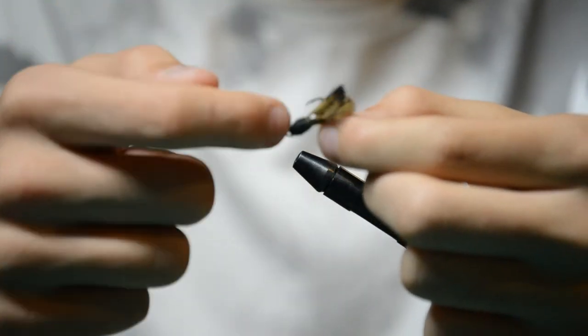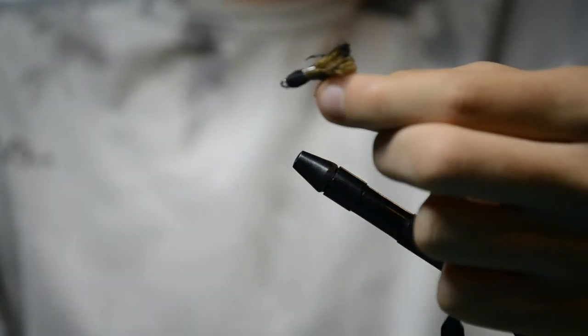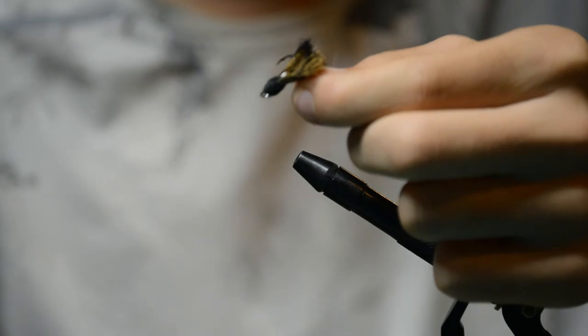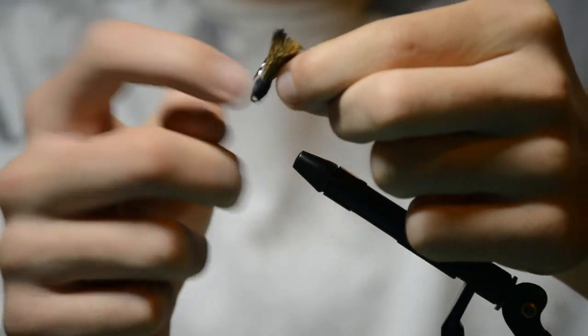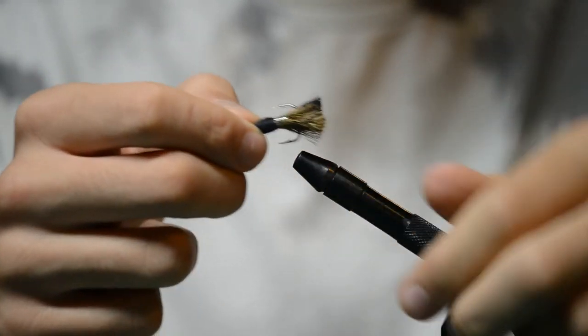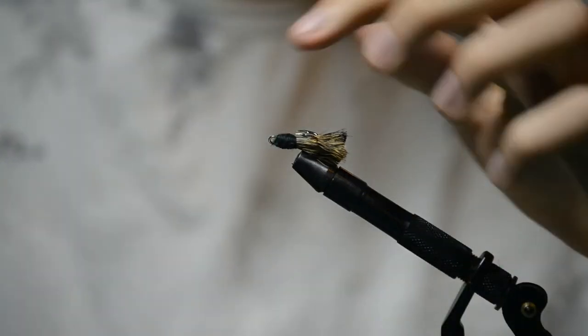So then you're gonna hold it, and then you're gonna take a hair dryer and hair dry it for about maybe close to a minute. It'll solidify it up, and then you'll just let your fly sit in your vise for a few hours.